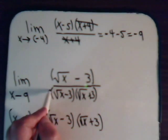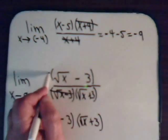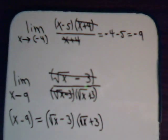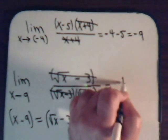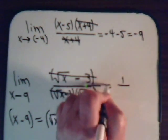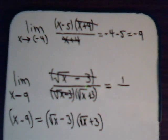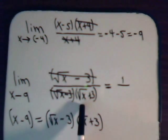And now we see that this term and this term cancel out. So we have 1 in the numerator. And then what's left down in the denominator is the square root of x plus 3.